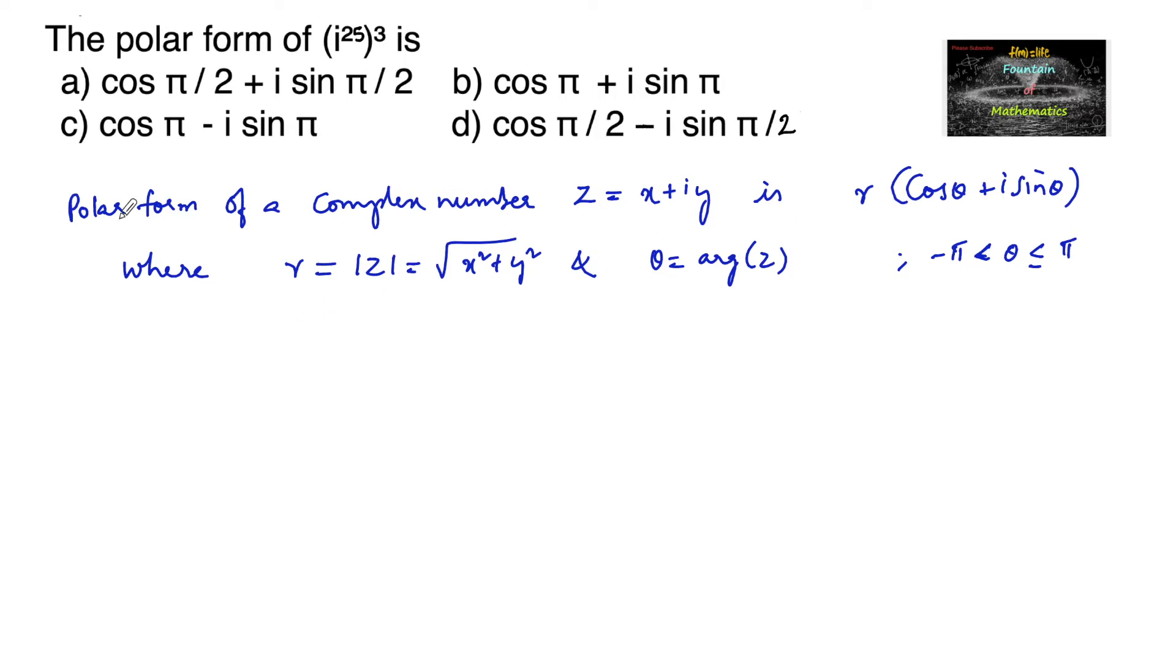Now let us simplify first i to the power of 25. Given complex number z is equal to i to the power of 25 whole to the power of 3, which can be written i to the power of 75. And if you divide with 4, 4 times 18 is 72 plus 3.